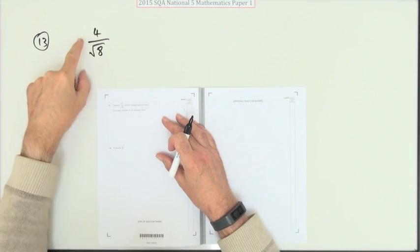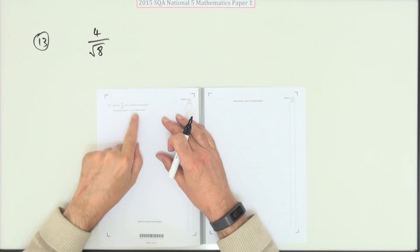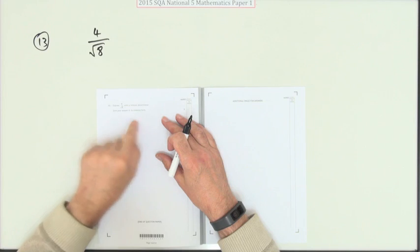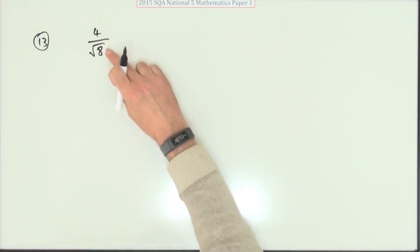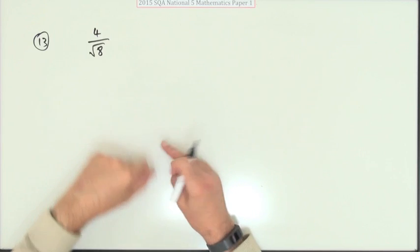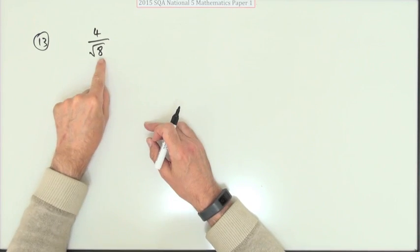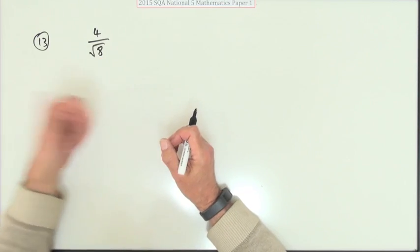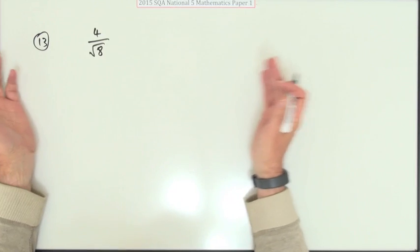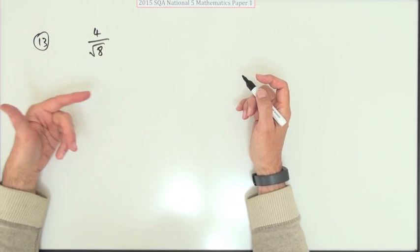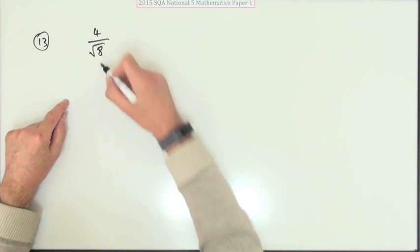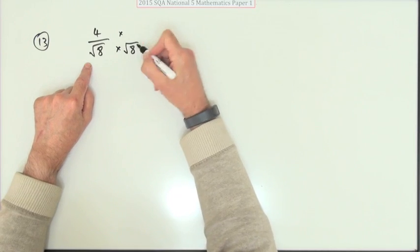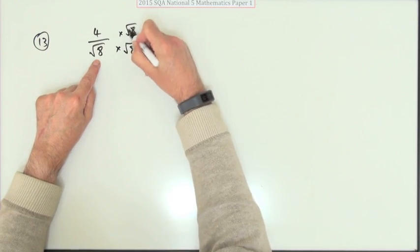Number 13: express this with a rational denominator, because just now it's irrational, and also give your answer in simplest form. That root eight can be simplified — some of that can just come out of the square root. It just depends: do you want to simplify at the end or simplify to start with? If you leave it to the end, multiply by root eight to rationalize the denominator.